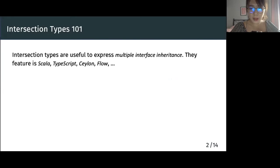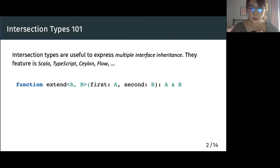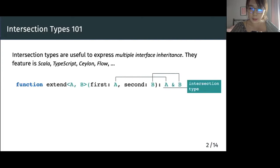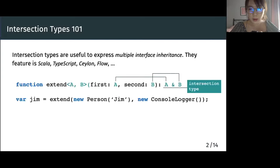Intersection types are common features in many newer mainstream OO languages. Among others, intersection types are useful to express multiple interface inheritance. They feature in programming languages like Scala, TypeScript, Ceylon, and Flow. For example, the documentation of TypeScript shows how intersection types can express a composition operator for objects. The polymorphic function Extend takes two objects and produces a result whose type is the intersection of the types of the original objects. For example, we can create a new object Jim. The Jim object has type Person and ConsoleLog, and acts both as a Person and a ConsoleLog. Using Extend to compose objects is much more flexible than the static inheritance mechanisms of common OO languages like Java or Scala. It can type-check flexible OO patterns that have been used for many years in many dynamically typed languages.